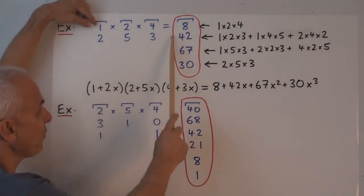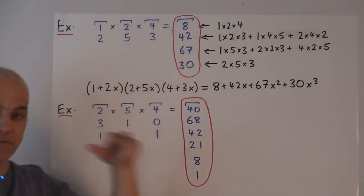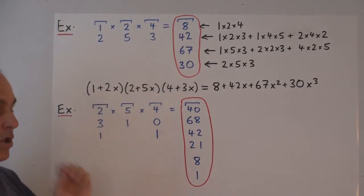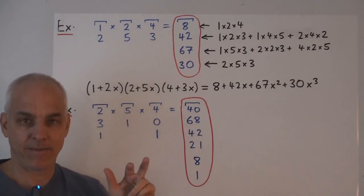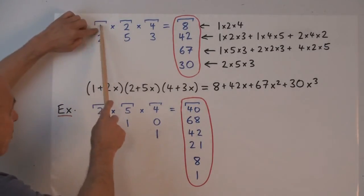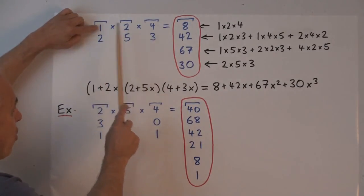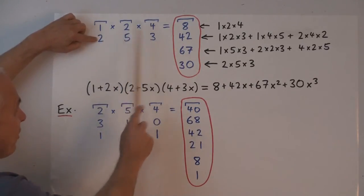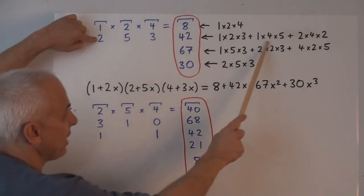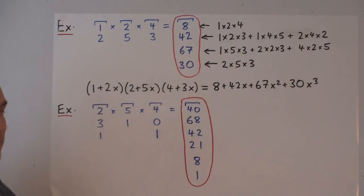To get the first entry, we have to look at products of three things. One from here, one from here, one from here, so that the sum of the indices is one. So that could be zero, zero, one. Or it could be zero, one, zero. Or it could be one, zero, zero. And there are the three products that we have to add up correspondingly. Giving us forty-two.